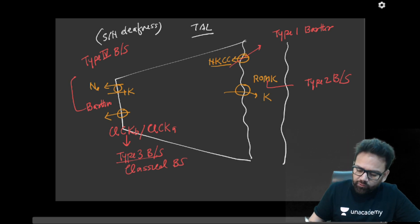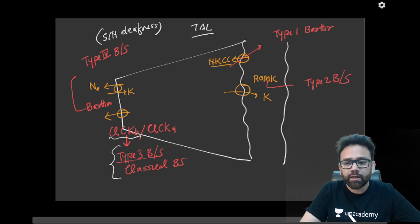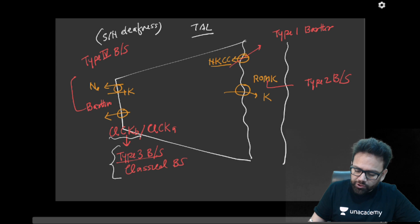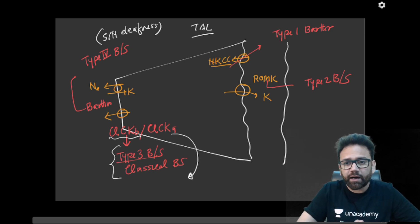Then you might ask me that why not if there is CLCKB mutation, why classical Bartter syndrome or type 3 Bartter syndrome is not accompanied by sensorineural deafness? Answer is that when there is mutation of CLCKB, it is compensated by CLCKA. That is why it does not have any types of sensorineural deafness. So there are four main types of Bartter syndrome.